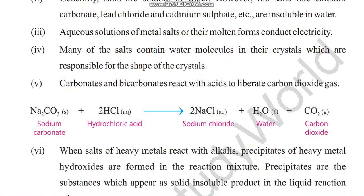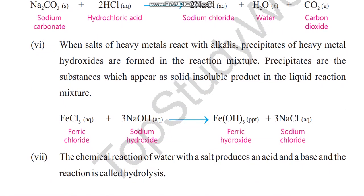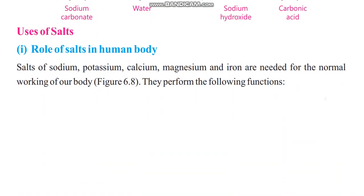When salts of heavy metals react with alkalis, precipitates of heavy metal hydroxides are formed in the reaction mixture. Precipitates are substances which appear as solid insoluble products in the liquid reaction mixture. The chemical reaction of water with a salt produces an acid and a base, and this reaction is called hydrolysis.